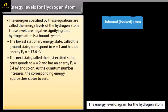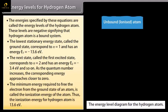The next state, called the first excited state, corresponds to N = 2 and has energy E₂ = −3.4 eV, and so on. As the quantum number increases, the corresponding energy approaches closer to zero. These levels are negative, signifying that the hydrogen atom is a bound system. The minimum energy required to free the electron from the ground state of an atom is called the ionization energy. The ionization energy for the hydrogen atom is 13.6 eV.